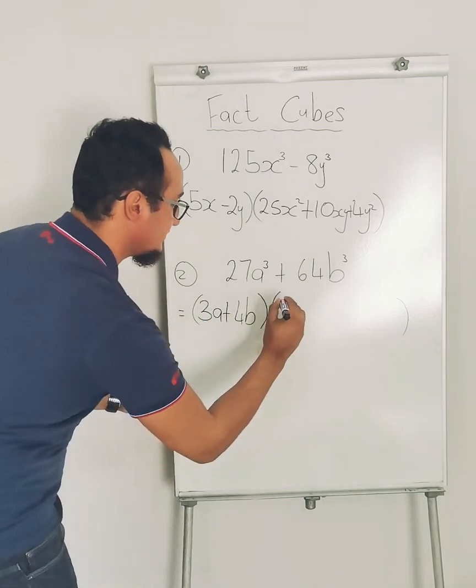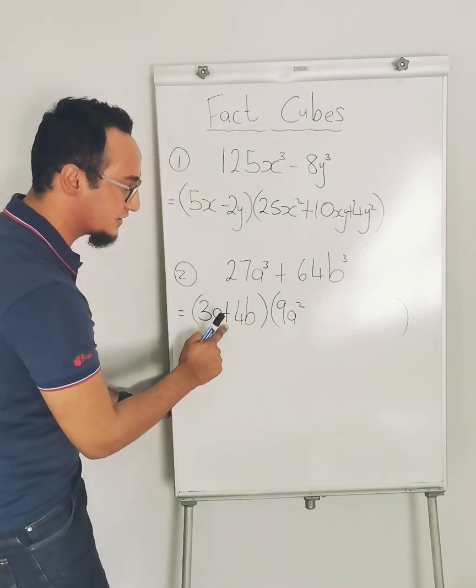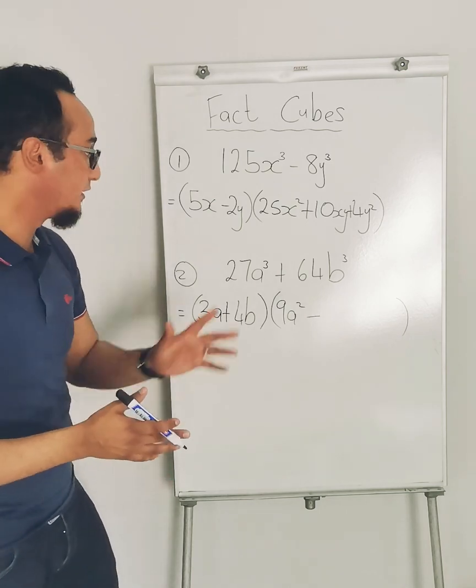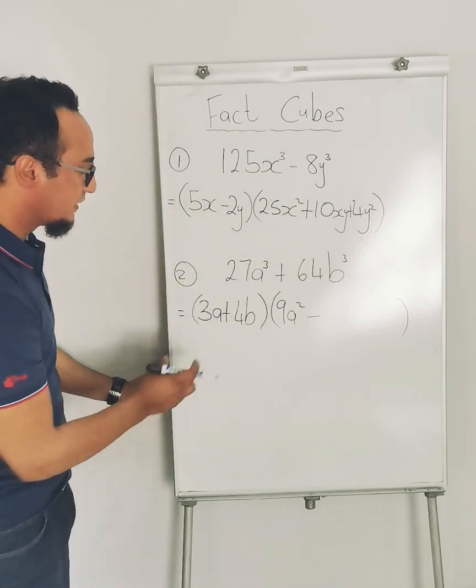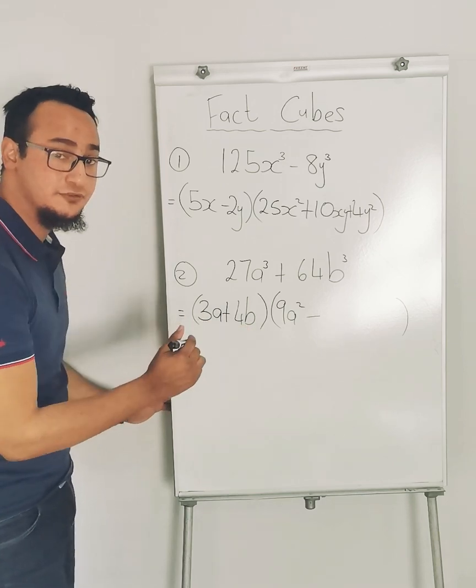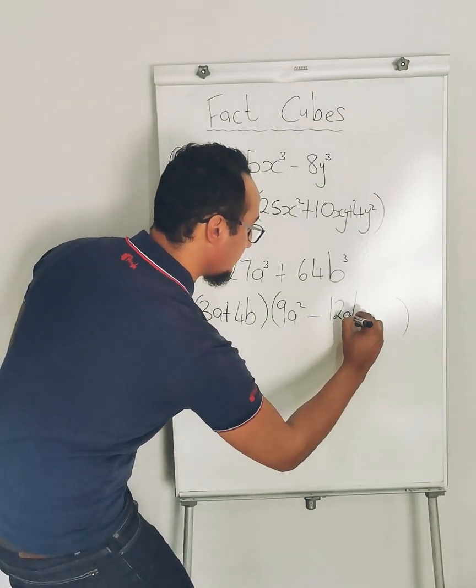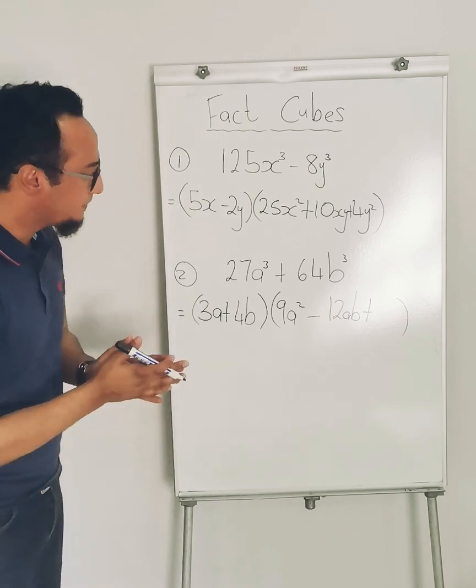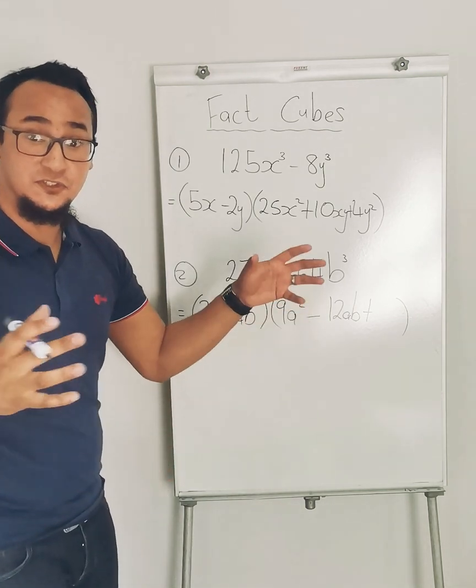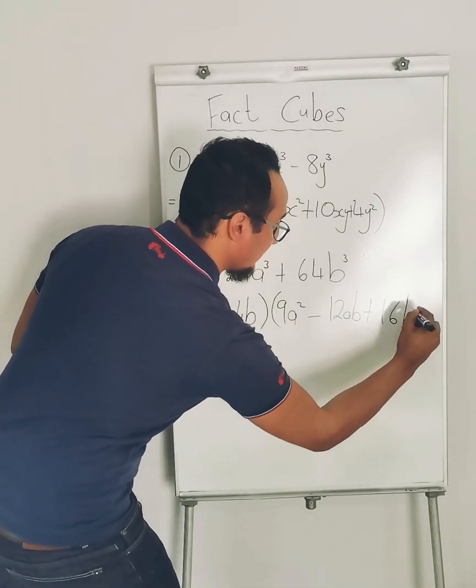Now 3a squared is 9a². What's the sign? Positive, meaning on this side it has to be a negative. Notice how it is different. Then I multiply these two together, which is 3a times 4b is 12ab, and then I have plus—that's always be a plus—and then 4b squared is equal to 16b².